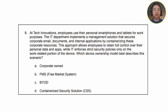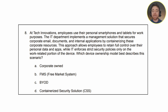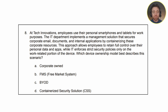The first question reads: at Tech Innovations, employees use their personal smartphones and tablets for work purposes. The IT department implements a management solution that secures corporate email, documents, and internal applications by containerizing these corporate resources. This approach allows employees to retain full control over their personal data and apps, while IT enforces strict security policies only on the work-related portion of the device. Which device ownership model best describes this scenario? A, corporate owned. B, FMS or free market system. C, BYOD. Or D, containerized security solution, otherwise known as CSS.